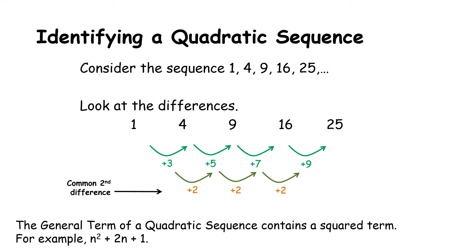The general term of a quadratic sequence contains a squared term, so it looks something like an n squared, an n, and a constant. For example, n squared plus 2n plus 1. There could be a coefficient on the n squared, a coefficient on the n, and then there is a constant.